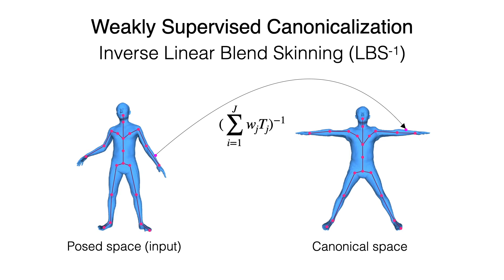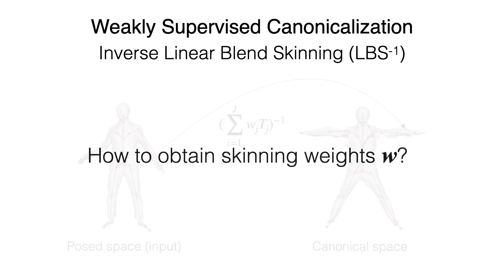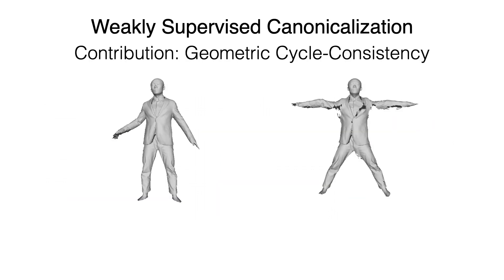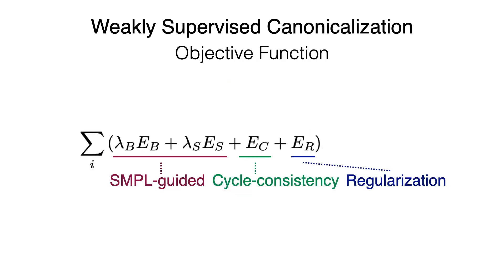If we take the inverse transformation of LBS, we can map a posed shape back to the canonical space. In other words, the problem becomes how to obtain skinning weights w on the posed scans. One naive approach is to copy and paste skinning weights from the SMPL body to the scan surface. However, we discovered this approach suffers from large distortions. Our key idea is to leverage geometric cycle consistency: any points on the scans are mapped to the canonical space by inverse LBS, and those points are re-posed by applying forward LBS. The original scan and the re-posed scan should be identical. We combine this geometric cycle consistency, nearest neighbor guidance from SMPL, and other regularizations for the objective function.